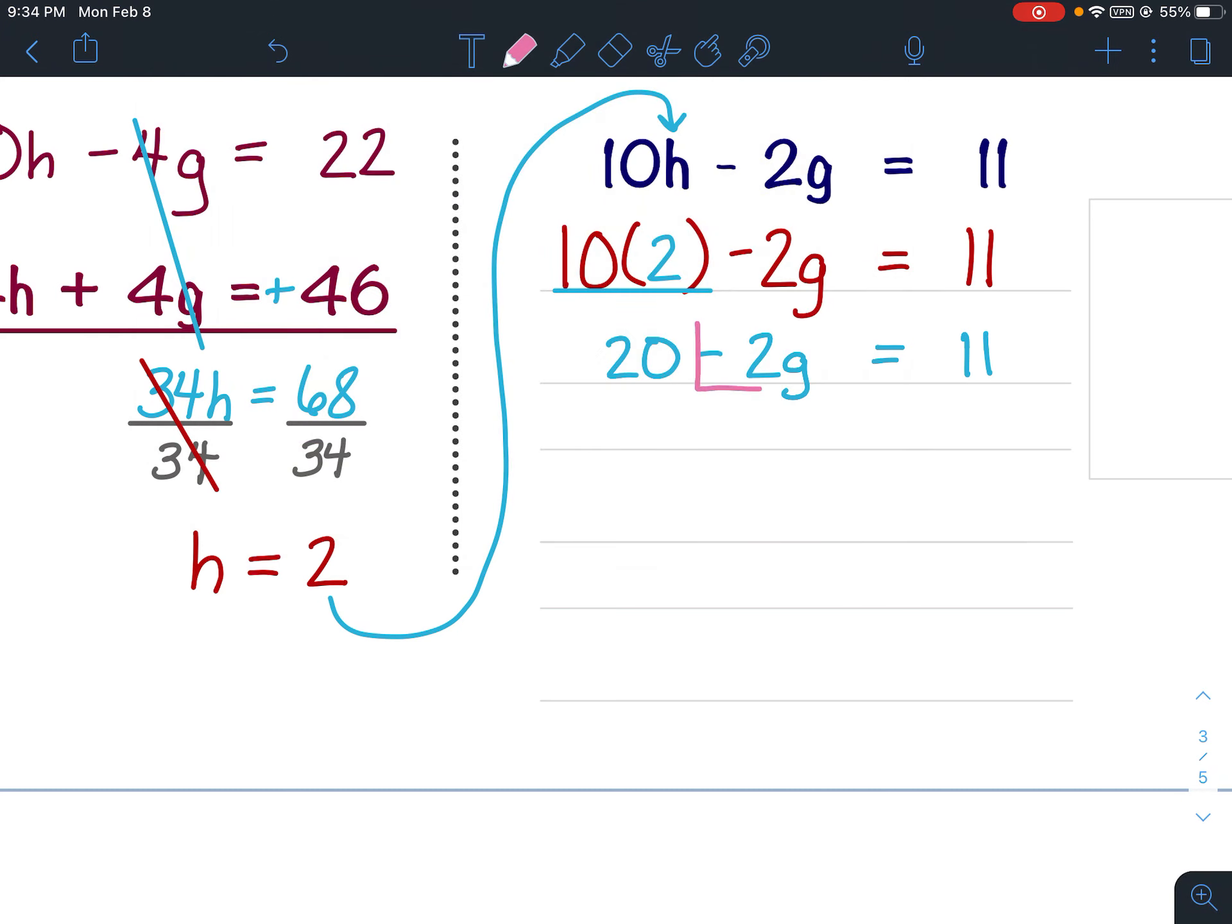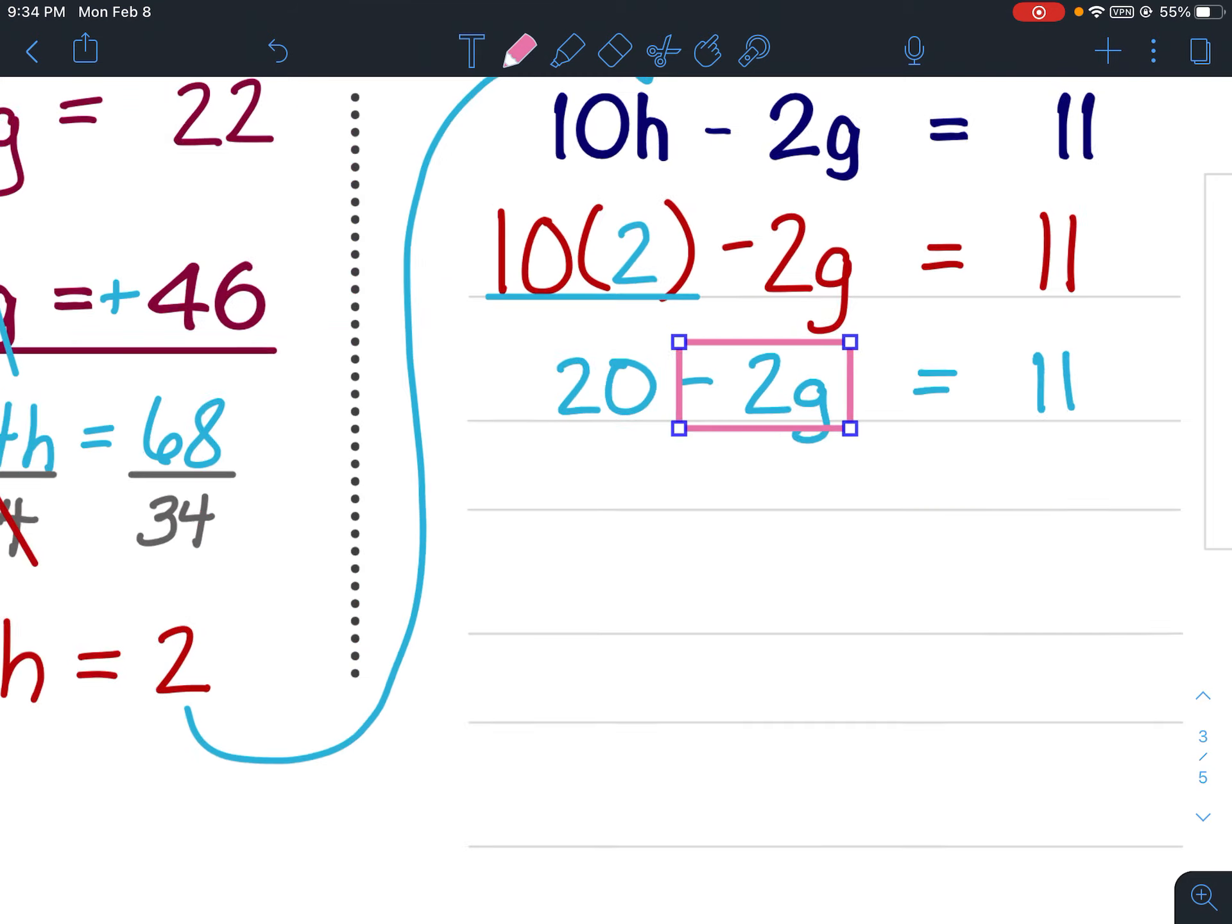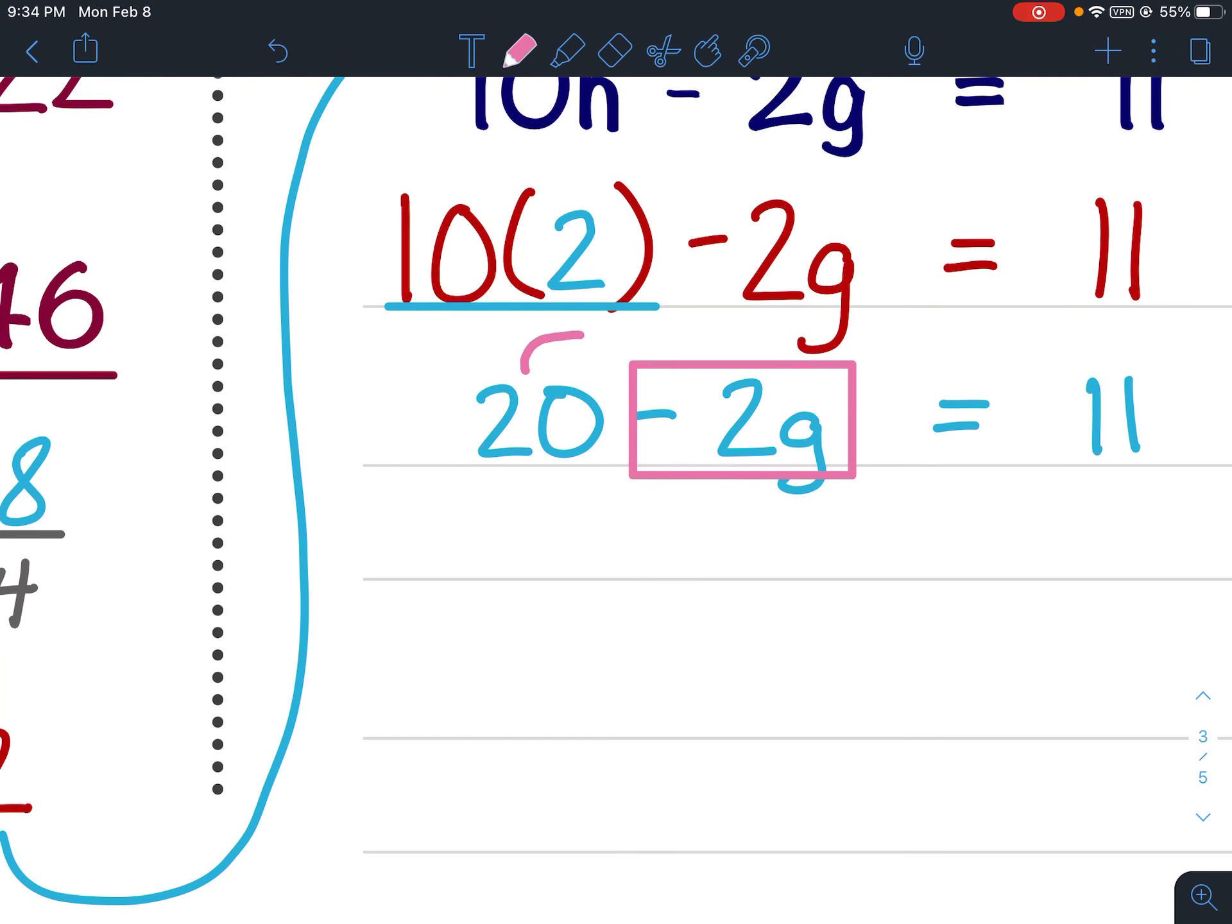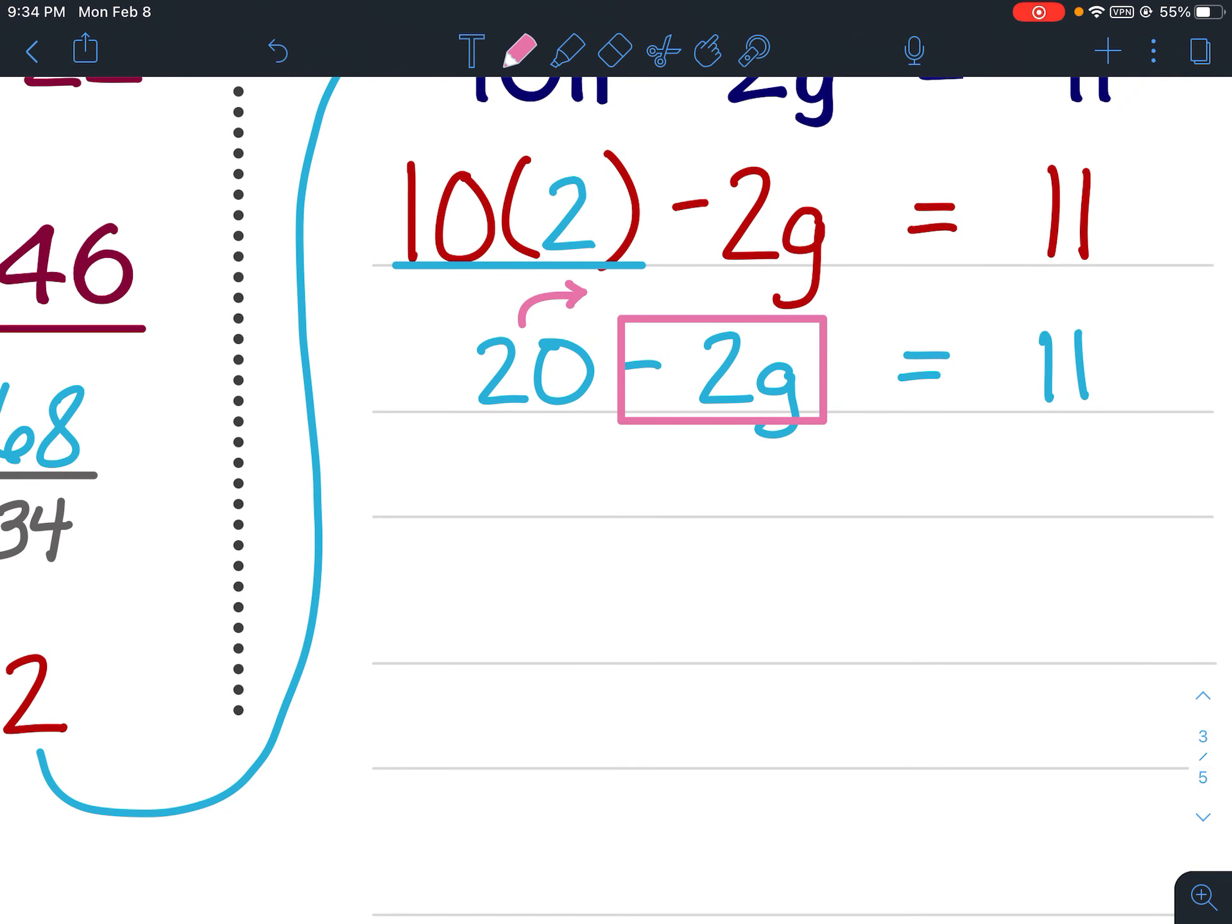I'm going to box my variable term. And I need to take this 20 to the other side of the equation. The inverse operation, since it's positive, it would be negative 20.